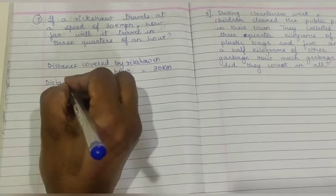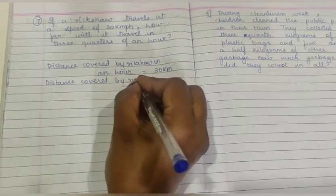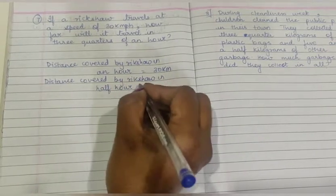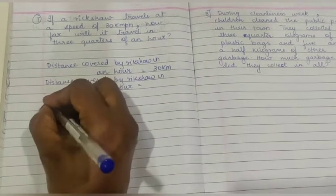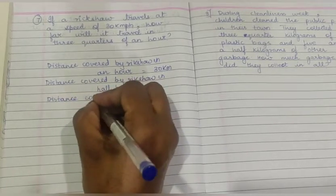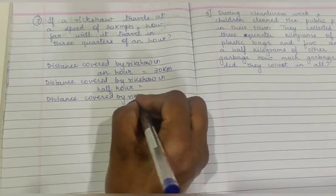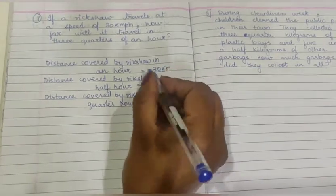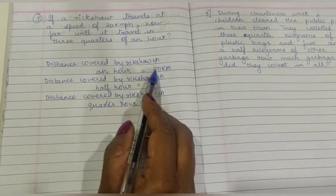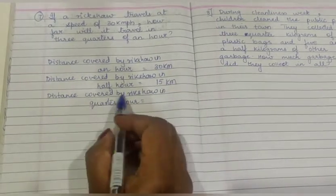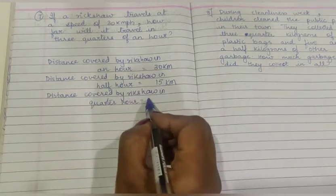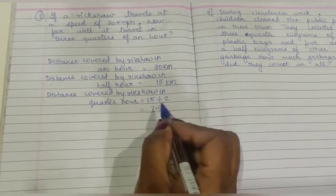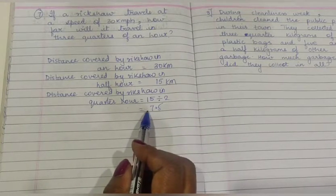Then, distance covered by rickshaw in half an hour. 1 hour is equal to 60 minutes, half an hour is equal to 30 minutes. Then distance covered by rickshaw in quarter hour. Distance covered by rickshaw in half an hour — what is the distance covered by rickshaw in quarter hour, meaning in 15 minutes? So what is half of 15? 15 divided by 2 is 7.5 km.